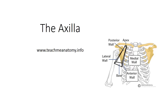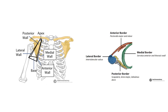Hi, I'm from Teach Me Anatomy, and in just over two minutes I'd like to talk about the borders, contents, and clinical relevance of the axilla. So what is the axilla? The axilla is an anatomical area located at the junction of the upper limb and the thorax. It is the main pathway by which structures enter and leave the upper limb. It is pyramidal in shape with four sides, a base, and an apex.